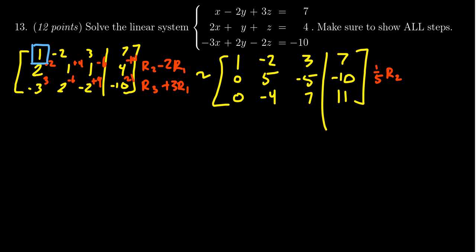My new pivot position is going to move to the 2-2 spot. I would love a 1 there. If I divide by 5, that'll give me exactly that. So just copy down your matrix again. This time the second row becomes 0, 1, -1 and -2, then 0, -4, 7 and 11.